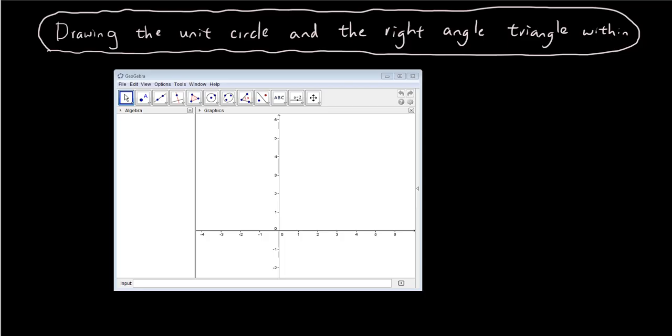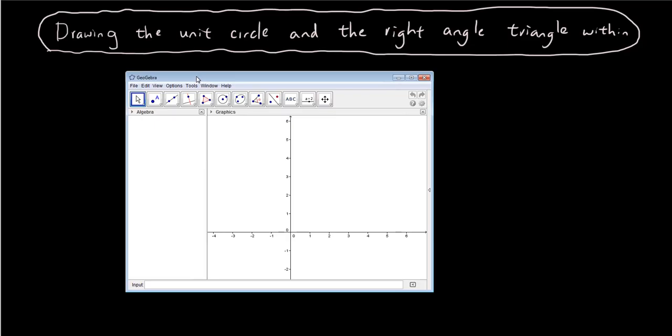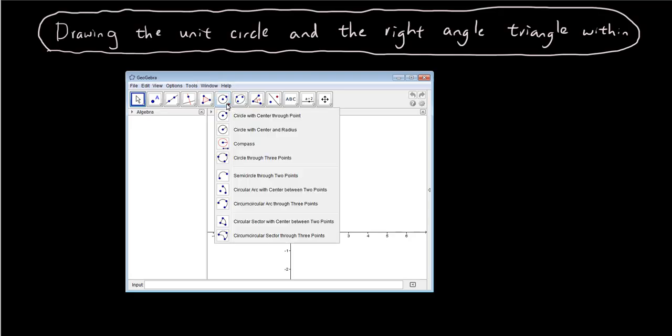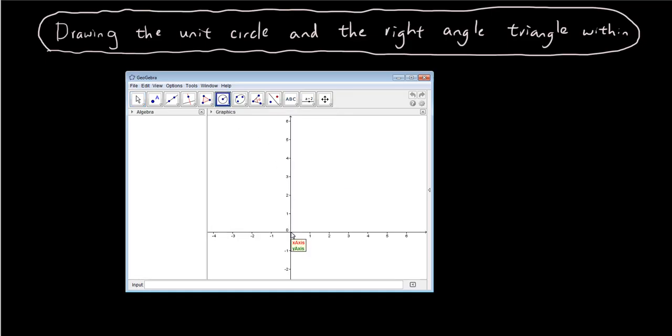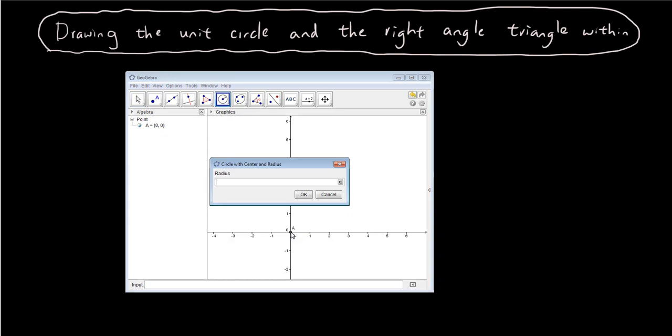So the first thing you want to do is open up Geogebra where we're going to construct the unit circle. What we're going to do is use the circle tool. We're going to pick circle with center and radius. We're going to click the origin and we're going to have a radius of 1.